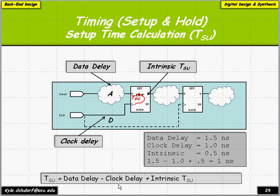The clock delay shifts out when we have to arrive, so it actually works in our favor. Taking some example parameters: we have 1.5 nanoseconds of data delay, a 1 nanosecond clock delay, and an intrinsic setup requirement of 0.5 nanoseconds. We see that we have a setup requirement of 1 nanosecond for this circuit.